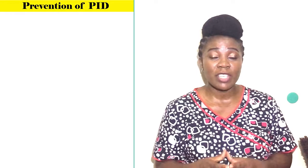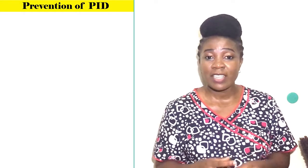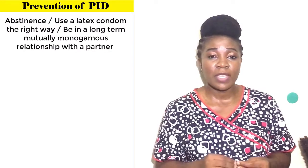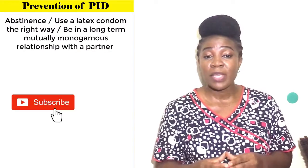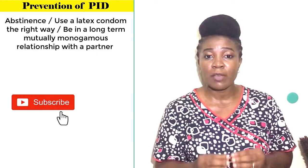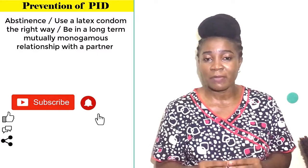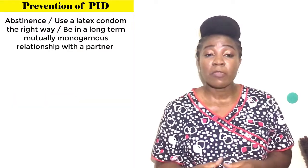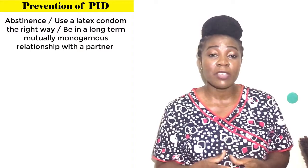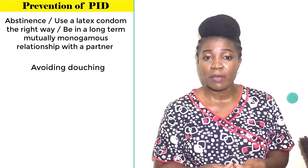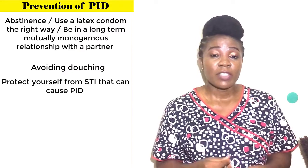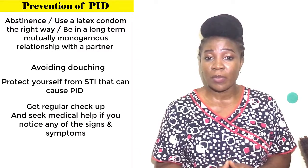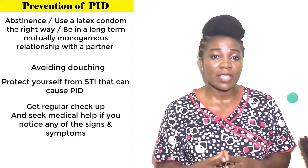The only way to completely avoid sexually transmitted disease is to not have vaginal, anal, or oral sex — in other words, abstinence — or to use a latex condom the right way, or be in a long-term mutually monogamous relationship. Sometimes PID is not due to a sexually transmitted infection; it can come from normal vaginal bacteria traveling to your reproductive organs. Avoiding douching may lower the risk. Protect yourself from sexually transmitted infections, get regular checkups, and seek medical help if you notice any signs and symptoms.